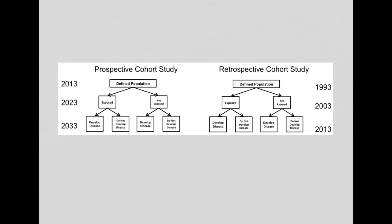Now, in this cohort, the prospective cohort study starts in 2013, and then we follow to 2023 and 2033. And this retrospective cohort study starts earlier, so the cohort is defined in 1993, followed up for exposure in 2003, and then disease outcome is assessed in 2013.